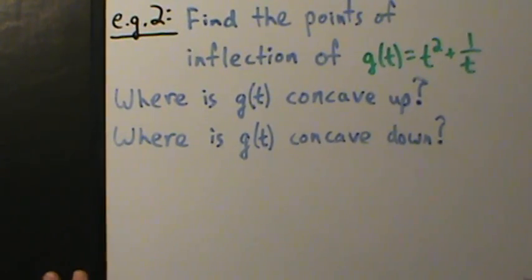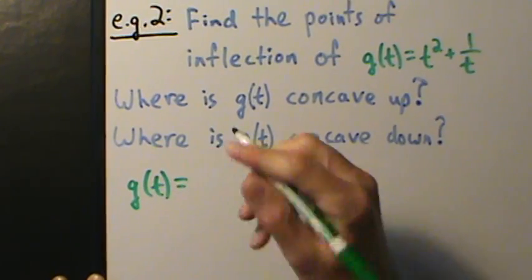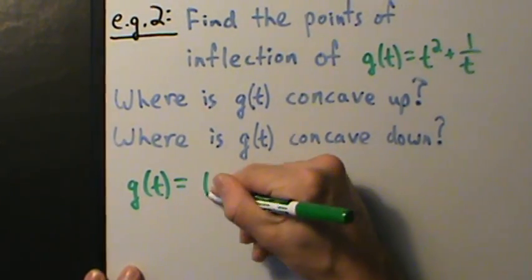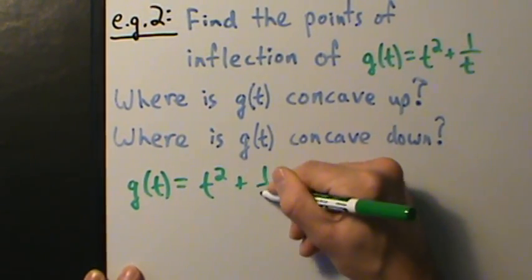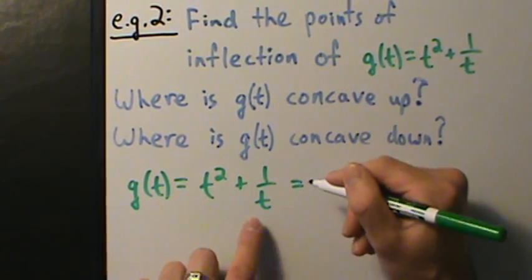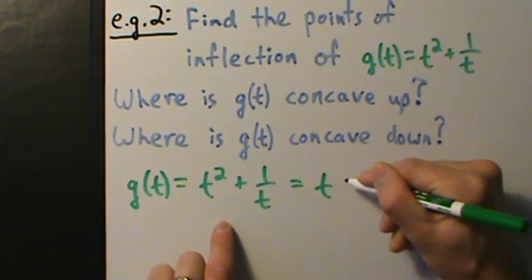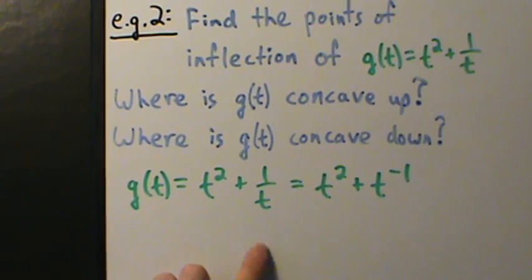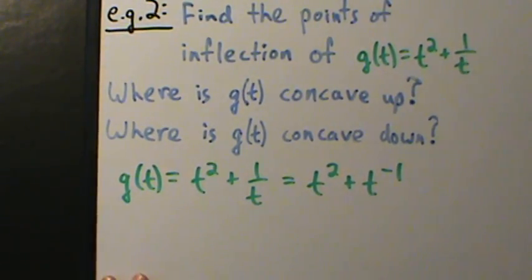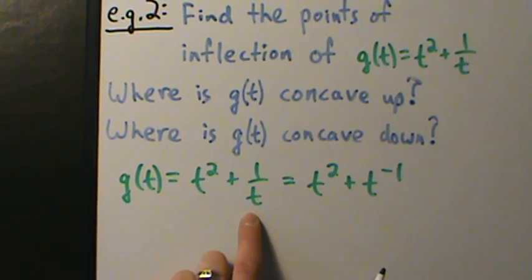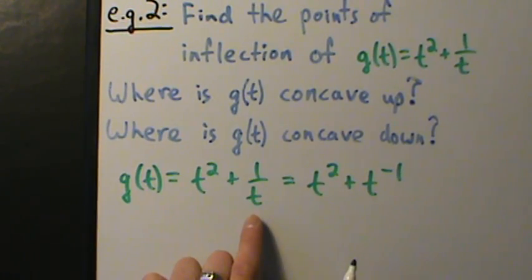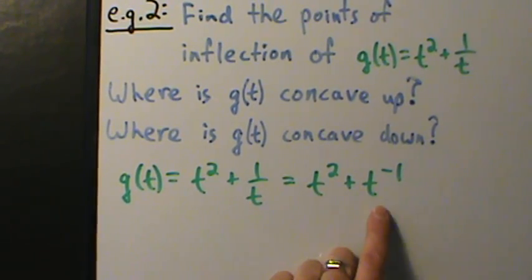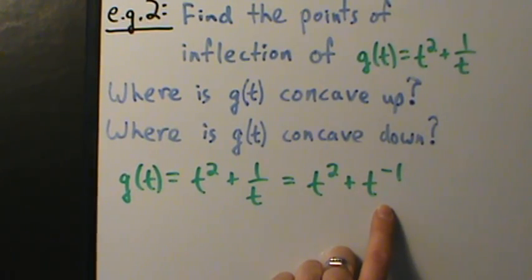So g of t equals t squared plus one over t. Now we're going to take derivatives. Instead of one over t, let's rewrite this as t squared plus t to the negative first. We could use quotient rule for one over t, but that's kind of overkill since it's pretty simple. Rewriting as t to the negative first and using power rule will be a little bit easier.